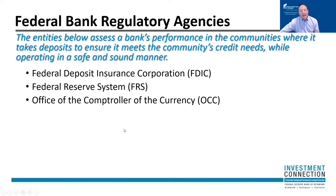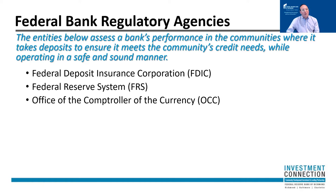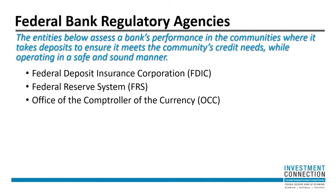There are three federal bank regulatory agencies tasked with enforcing the Community Reinvestment Act. What they do is assess a bank's performance in the communities where they are taking deposits — they have to ensure they are serving those communities, providing access to loans, home mortgages, banking services, and doing so in a safe and sound manner. The three agencies are the Federal Deposit Insurance Corporation — better known as the FDIC — the Federal Reserve System, of which the Richmond Fed is part, and the Office of the Comptroller of the Currency.